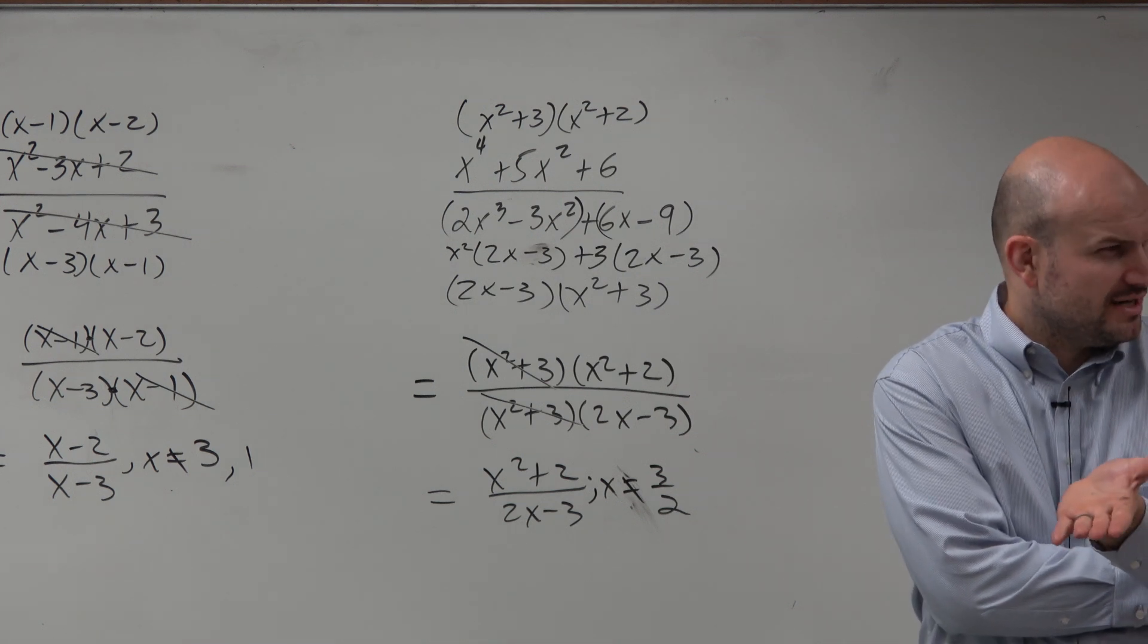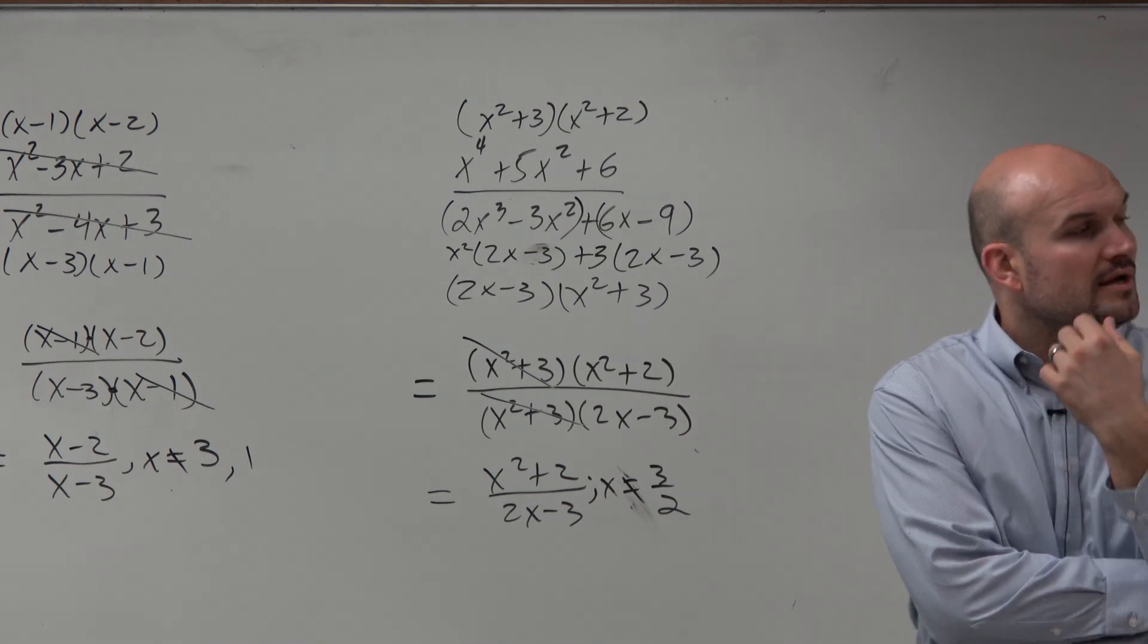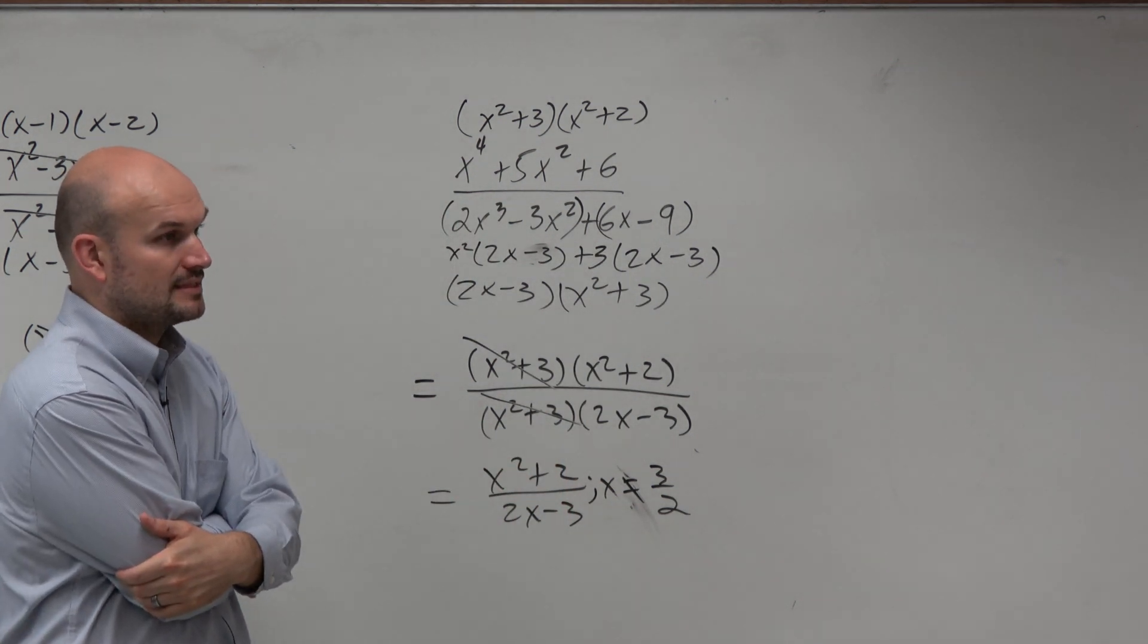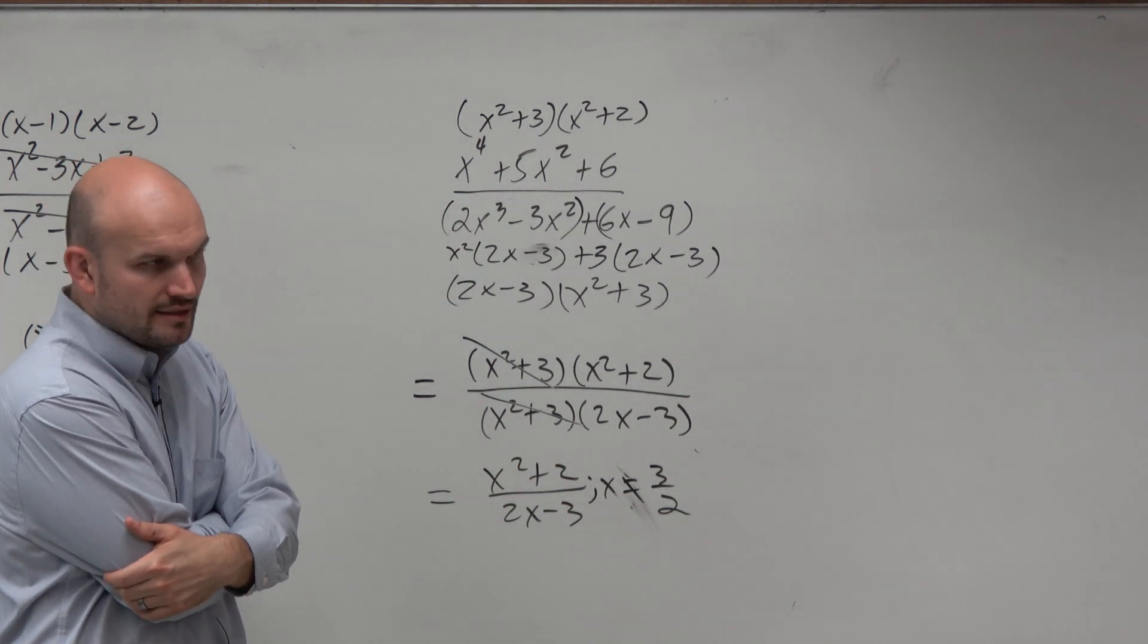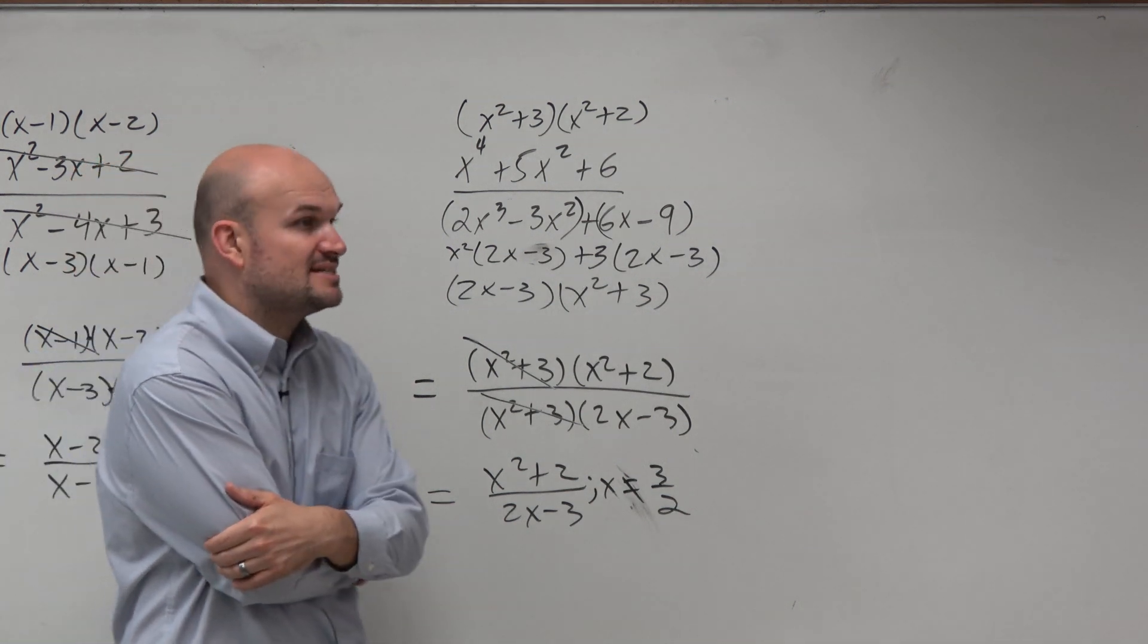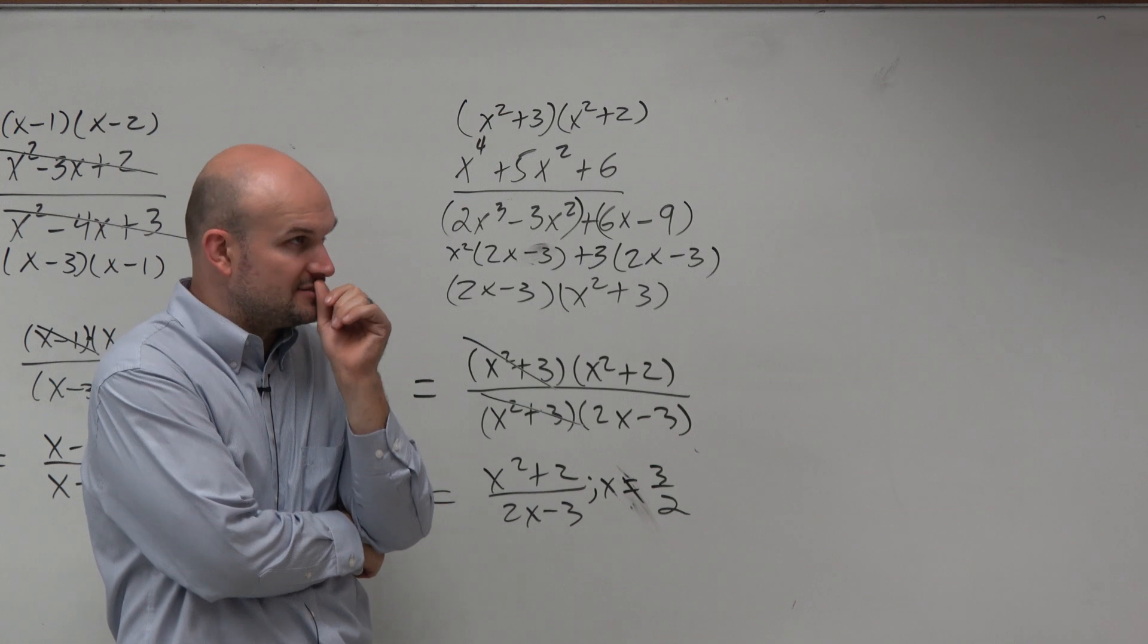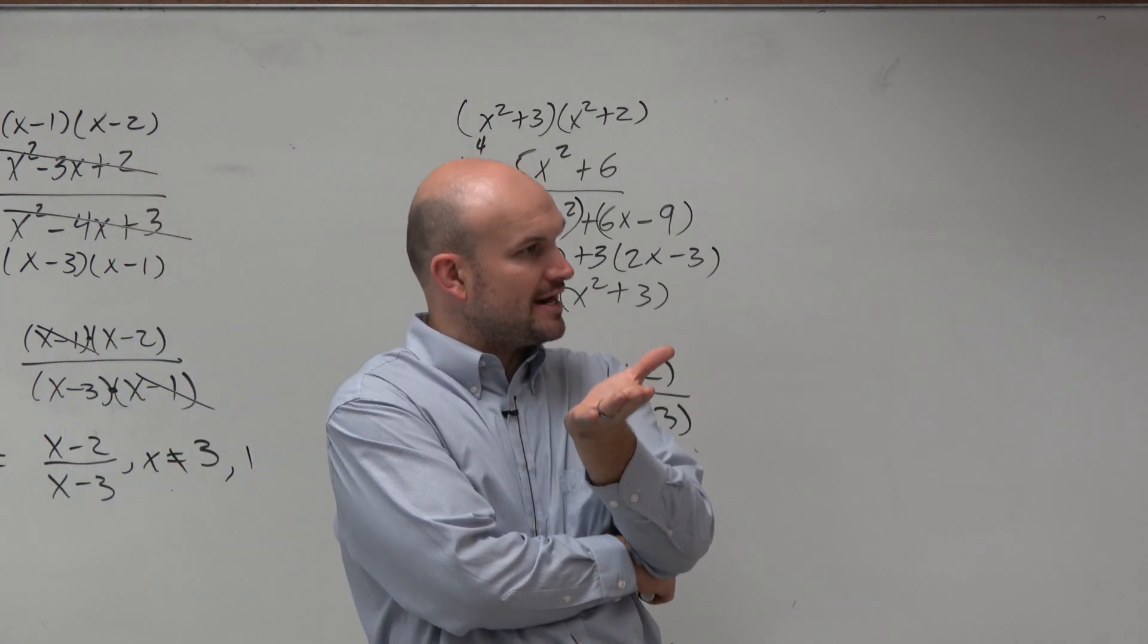Should we exclude imaginary numbers? No. The excluded values are only going to be real numbers that make the denominator 0. I thought it was i square root of 3i is the same thing as i square root of 3. We write it as i square root of 3 to not confuse the i under this radical. But i is just the 3i.